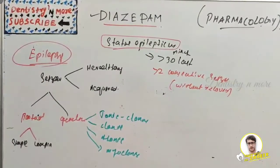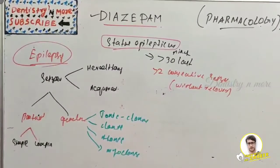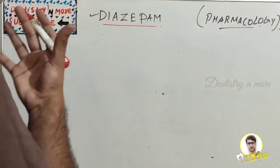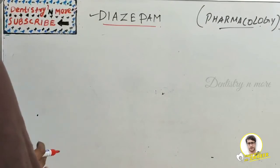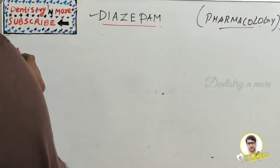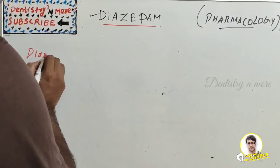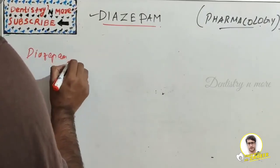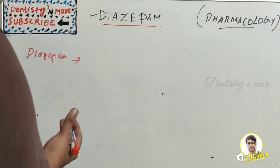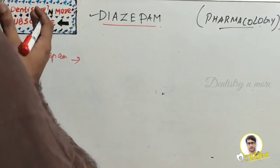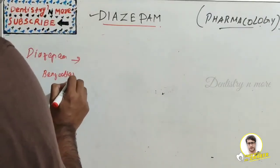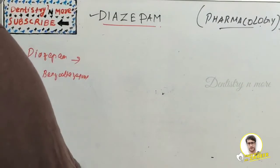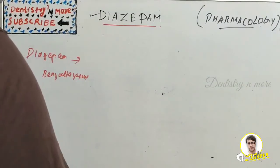Diazepam is a drug used to treat epilepsy. The primary goals of treating acute seizures are prompt cessation of the seizure and prevention of recurrence. Diazepam produces its anti-convulsion effect by interacting with benzodiazepine receptors in the brain.